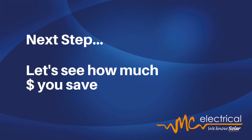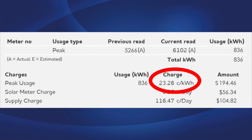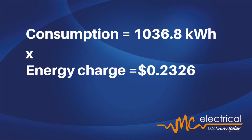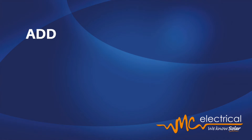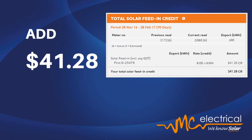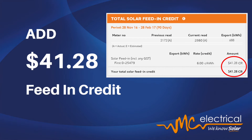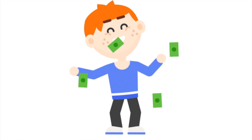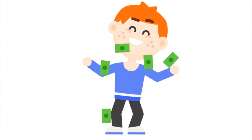You can calculate your dollar savings by multiplying this amount by your energy charge per kilowatt. For this bill it's 23.26 cents, which equals a savings of $241.15. Now add your $41.28 from your feed-in credits and you have $282.43 generated in savings directly from your solar.